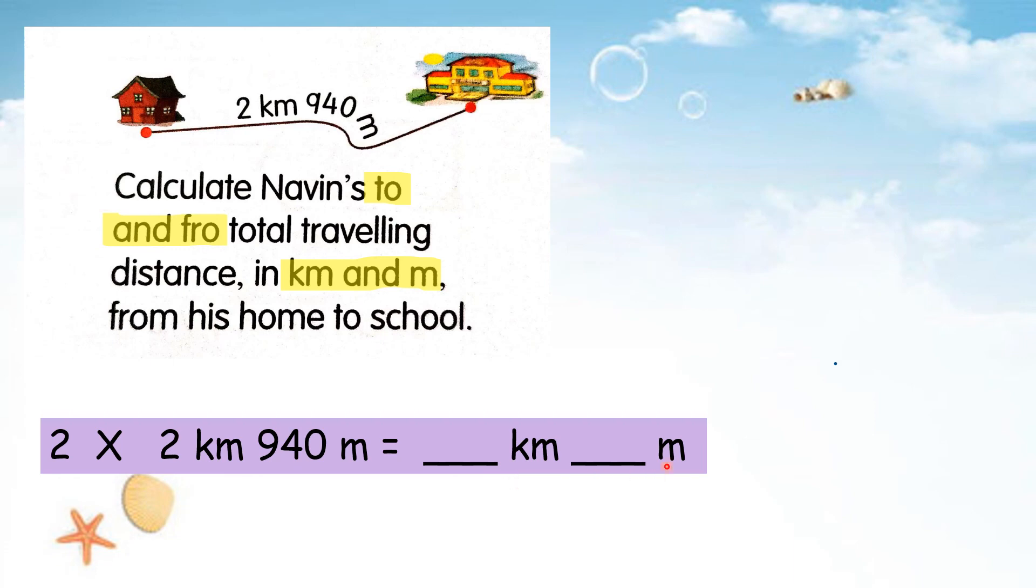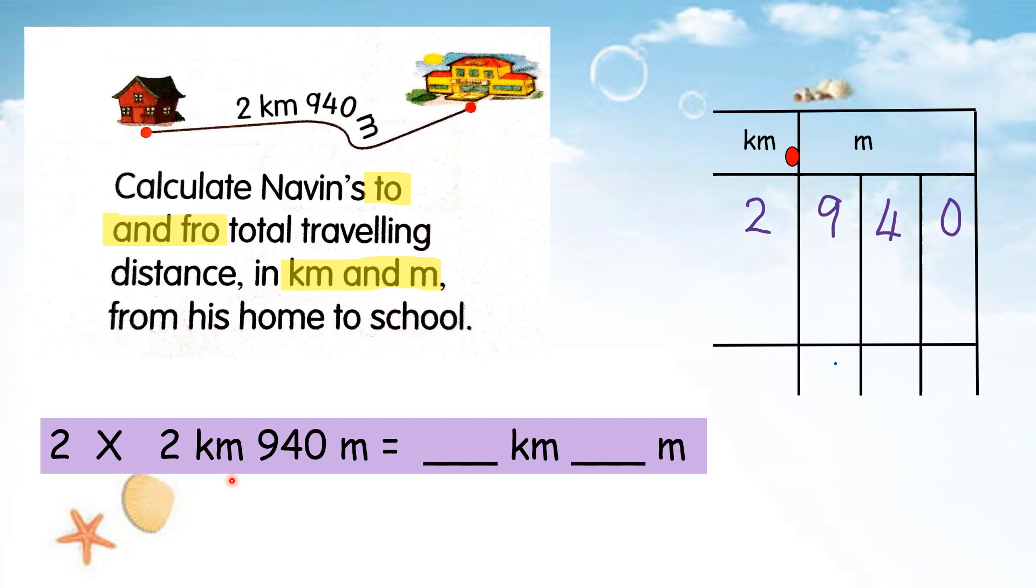Now we need to calculate the answer. So we will choose 1-3 box, because km and m. So now we write the measurement in 1-3 box. 2 km 940, so we write 940 and times 2. So we start 2 times from the back. 2, 0, 0. 2 times 4 is 8. 2 times 9, 18. 2 times 2, 4, and then plus 1, 5. So how many km? This is km, right? So it is 5 km. And how many meters? 8, 8, 0. 880 meters.